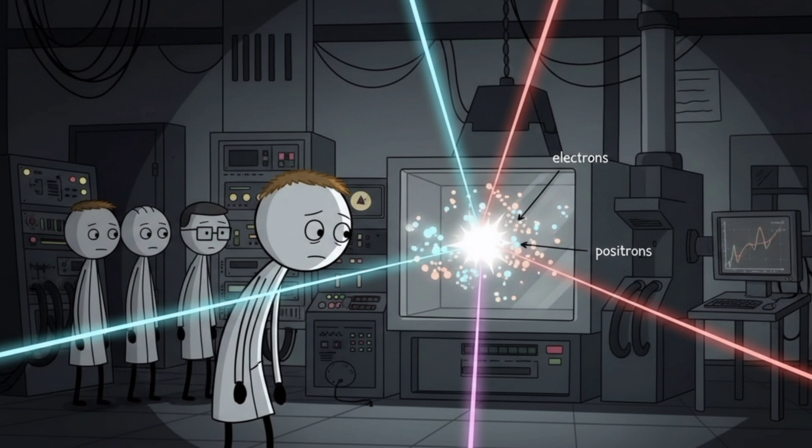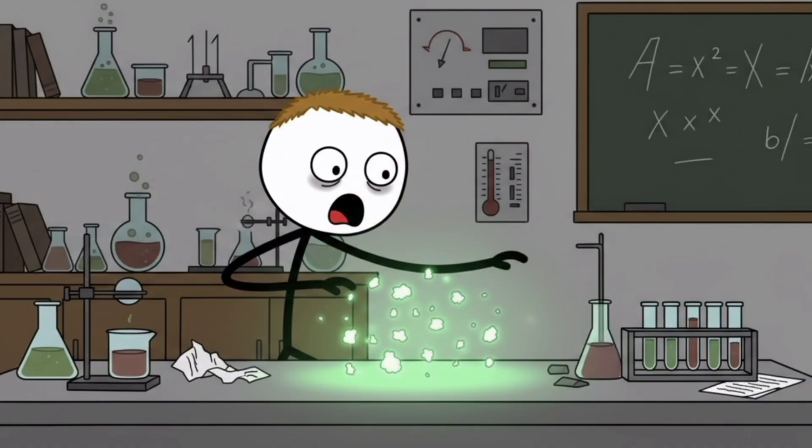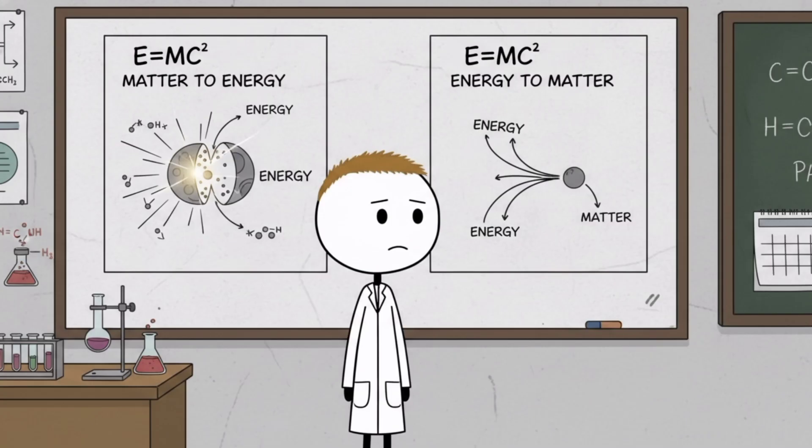And literally created particles out of nothing but laser beams. Researchers at Brookhaven National Laboratory smashed photons together. Pure light particles with zero mass and out popped electrons and positrons. Actual matter with mass just appeared from light. They turned E equals mc squared backwards, and it worked.